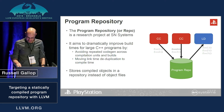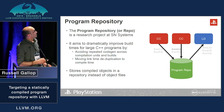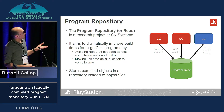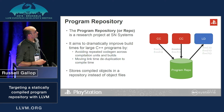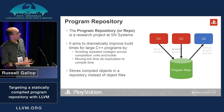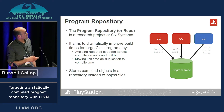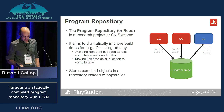In the illustration on the right, the first compile produces foo1 and foo2 and sends those to the program repo. The second one realizes from the program repo that foo2 has already been compiled and only compiles foo3. Then the link stage gets foo1, foo2, and foo3 straight out of the repository.